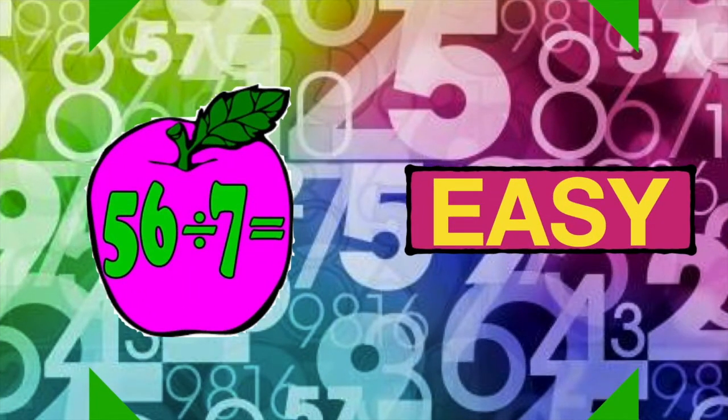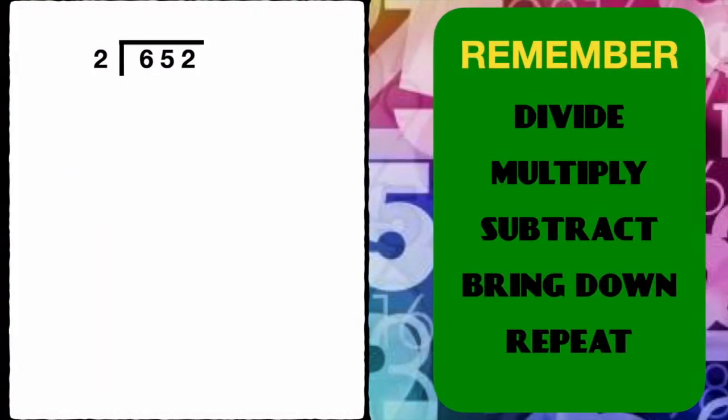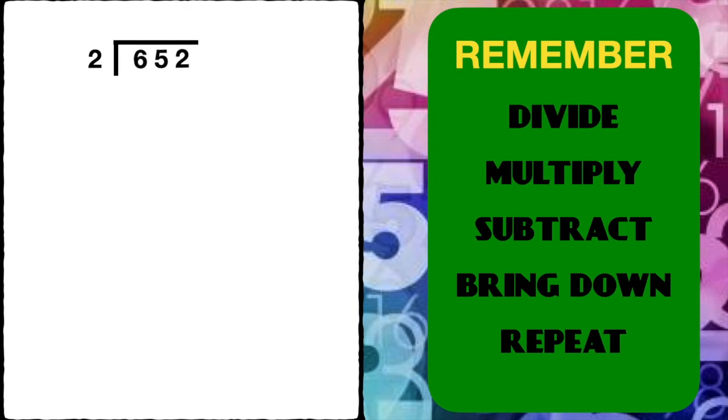Let's begin dividing. We'll start off with an easy division problem. Let's take a look. We have 652 and we want to divide that by two. Remember the steps of division as we go: divide, multiply, subtract, bring down, and repeat. Let's solve.